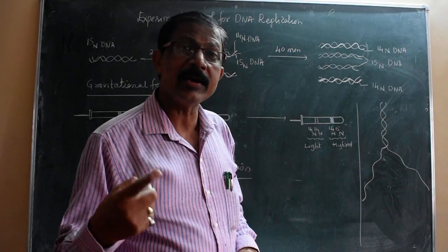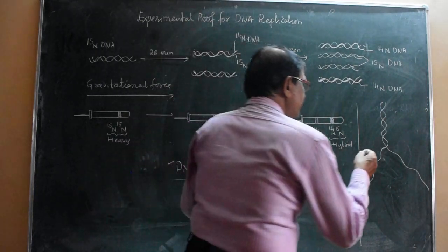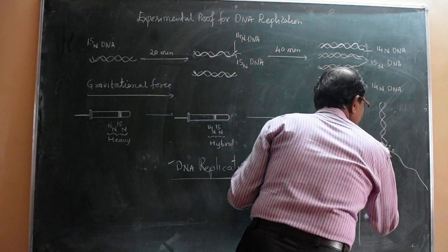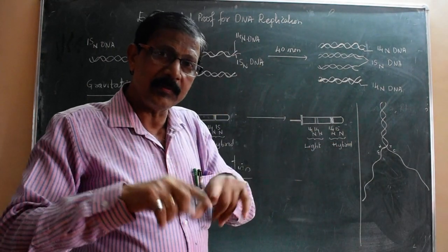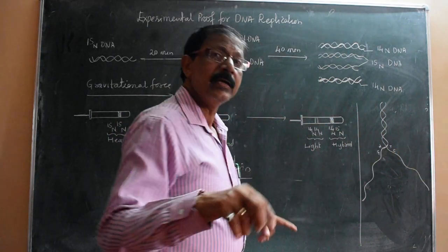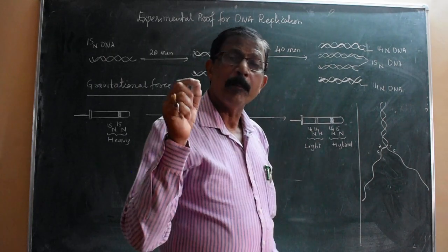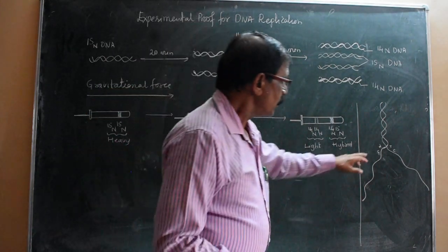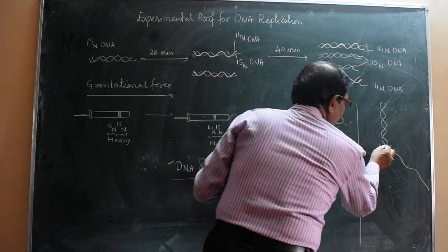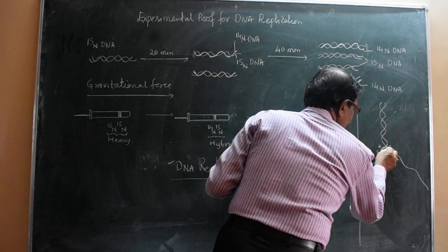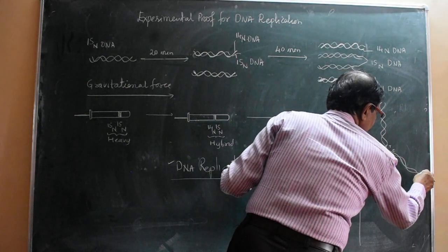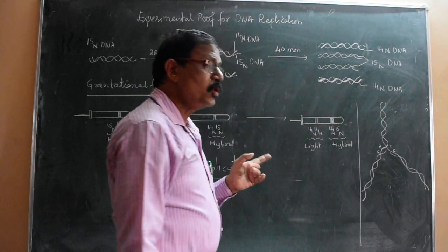Now at that particular portion the single-stranded structure undergoes the polymerization process. For example, here is A and here is T, here is G and here is C - the hydrogen bonds between the two bases are separated. Very quickly, new strand synthesis takes place and in this way, two daughter DNAs are formed.